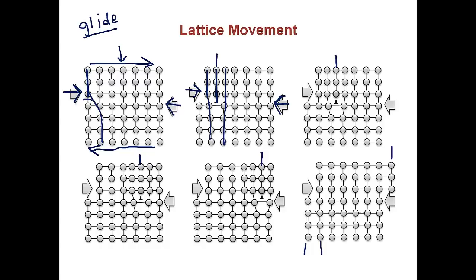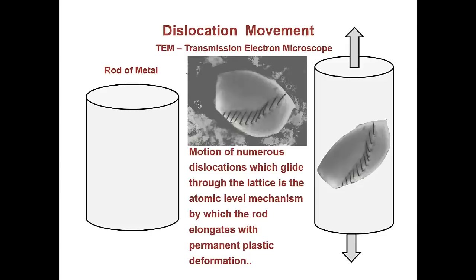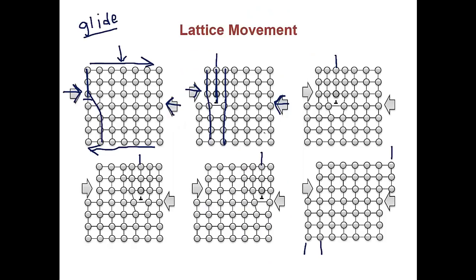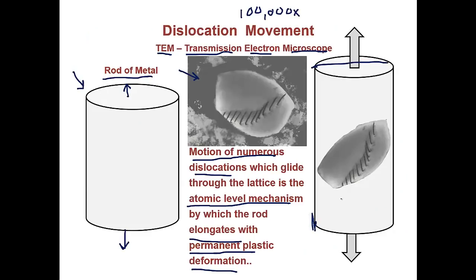Here we have a TEM — transmission electron microscope — image at about 100,000 times magnification. Consider a rod of metal: if we pull on it from top and bottom, it gets longer but also a little thinner. Motion of numerous dislocations that glide through the lattice is the atomic-level mechanism by which the rod elongates with permanent plastic deformation. This section of lattice has permanently changed shape — the rod isn't going to return to its original form after being bent; it is permanently, plastically deformed.